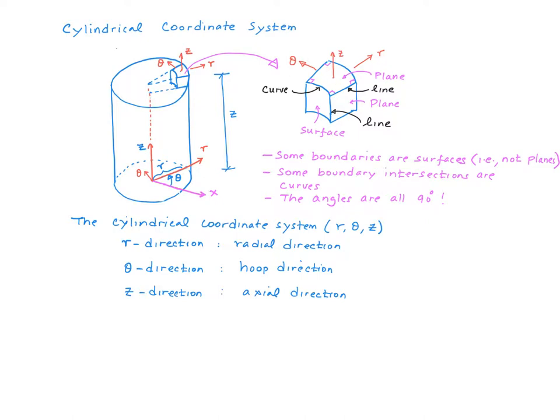There are six faces to this differential element. Two of these faces, this one right here at the top and at the very bottom, are perpendicular to the z-axis. And these are planes. The faces on the sides are perpendicular to the theta-axis, or the hoop-axis, and they are planes as well.